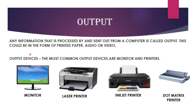The next event in the processing cycle is output. Any information that is processed by and sent out from a computer is called output. Output can be in the form of printed paper, audio, or video. The most common output devices are monitor, printer, etc. A monitor is an output device which displays information to the user.